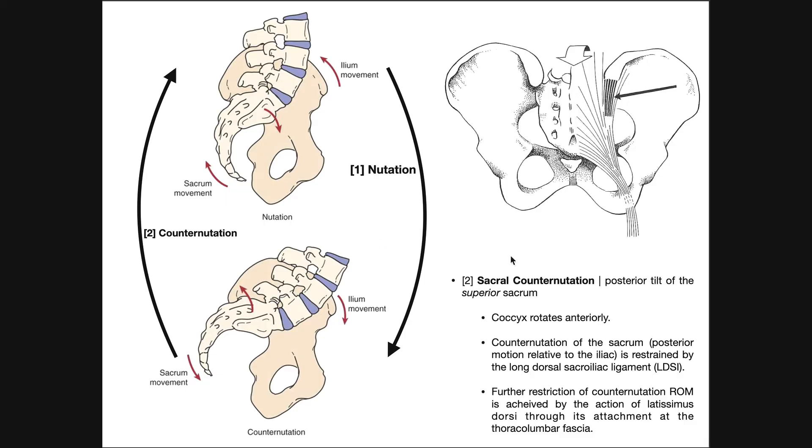And in general, we can say that it's posterior tilt of the superior sacrum, so it tilts back posteriorly, gets back to its original position, but also the coccyx rotates anteriorly, along with the inferior sacrum.